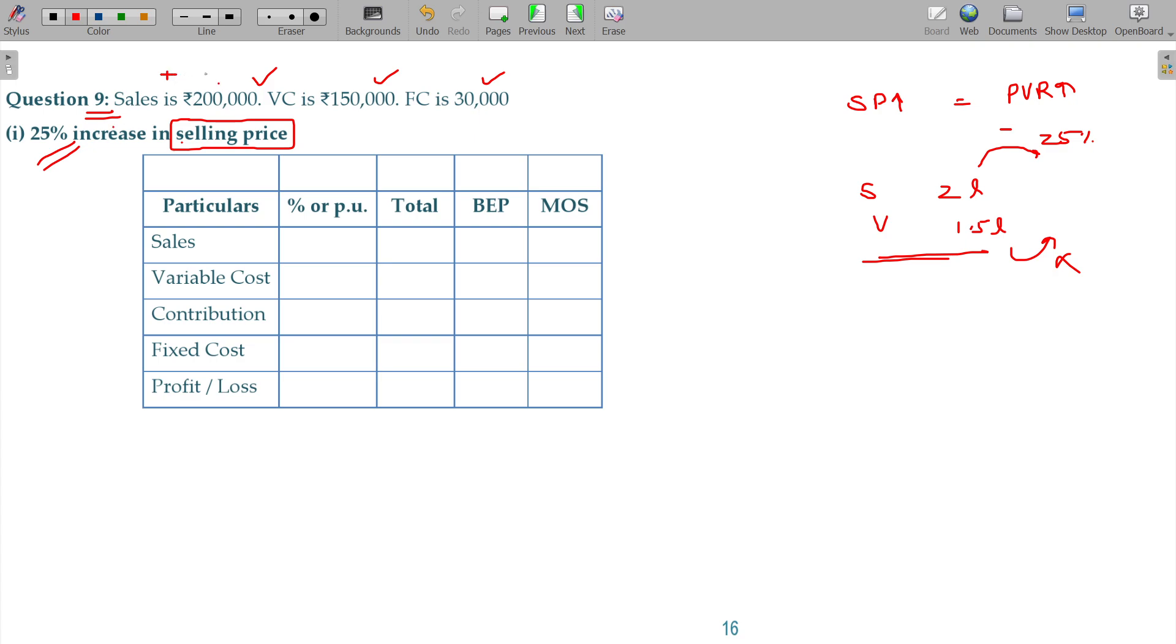I am going to add 25% on this which is 50,000. Revised sales being 2 and a half lakhs, otherwise 250,000.